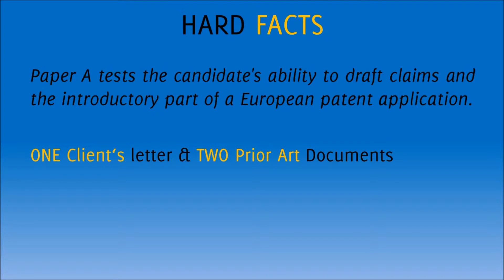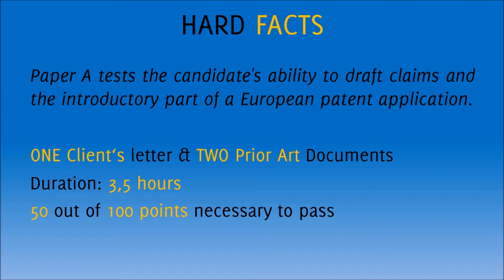When you get Paper A, you will receive one letter from the client explaining the invention and also what the client likes to claim, and two prior art documents. This is a rather small number of documents, and the duration of 3.5 hours makes this paper a rather comfortable one. Furthermore, as with all four papers of the main examination, you only need to get 50% of the points to pass this paper.